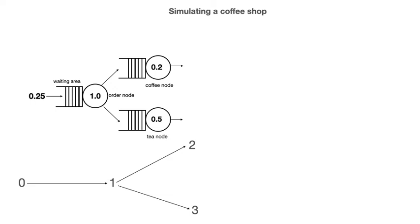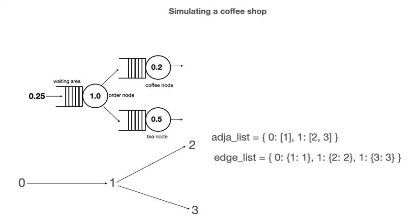We create the adjacency list for this graph as shown here. You provide a list of nodes that the node before the colon is connected to. We specify that node 1 is connected to nodes 2 and 3 by writing 1, colon, then 2 and 3 in square brackets. We then specify the edge_list to tell queuing tool there is a queue of type 1 on the edge connecting nodes 0 and 1, a queue of type 2 on the edge connecting nodes 1 and 2, and a queue of type 3 on the edge connecting nodes 1 and 3. We use these variables to create the graph object that is passed to the queue network constructor in the usual way.